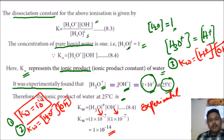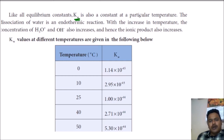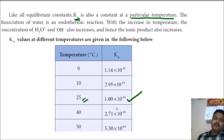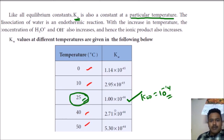Like all equilibrium constants, KW is constant at a particular temperature. Throughout this chapter we will use KW = 10^−14 because 25°C is our normal temperature. However, if temperature changes, the KW value also changes.